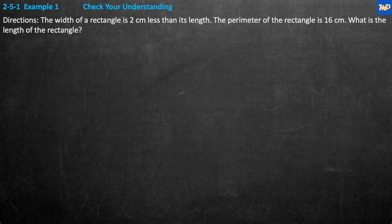Example 1, check your understanding. I want you to stop the video and try it yourself. The problem says: the width of a rectangle is 2 centimeters less than its length. The perimeter of the rectangle is 16 centimeters. What is the length of the rectangle? Go ahead and give it a try.